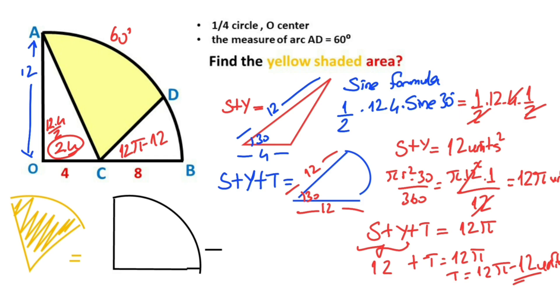The quarter circle area equals π times 12 squared over 4, which is 36π units squared. The right triangle area is 24 units squared, and region T equals 12π minus 12.